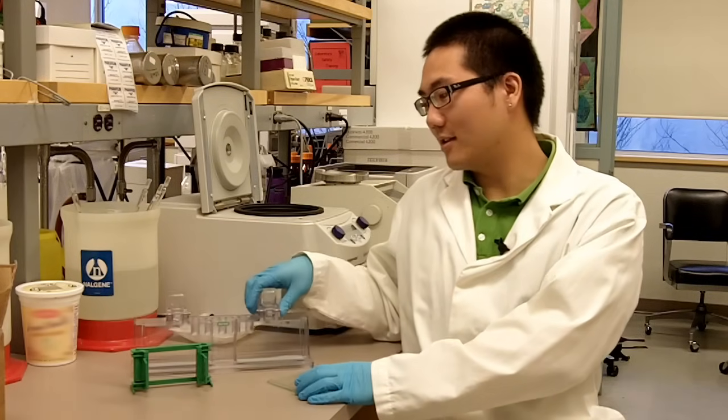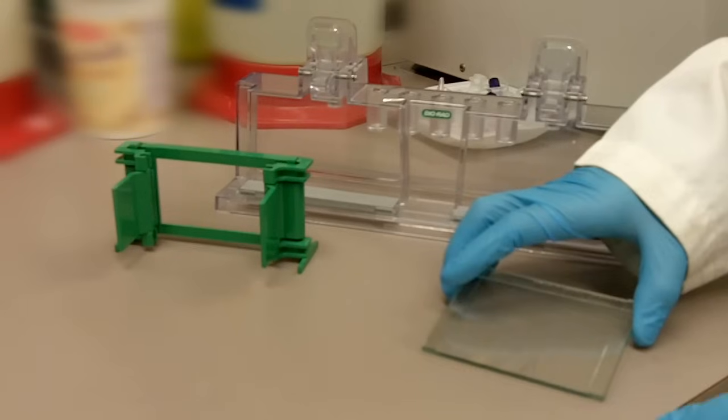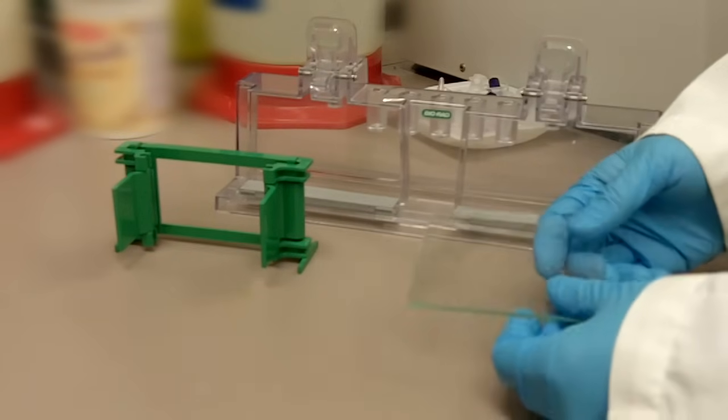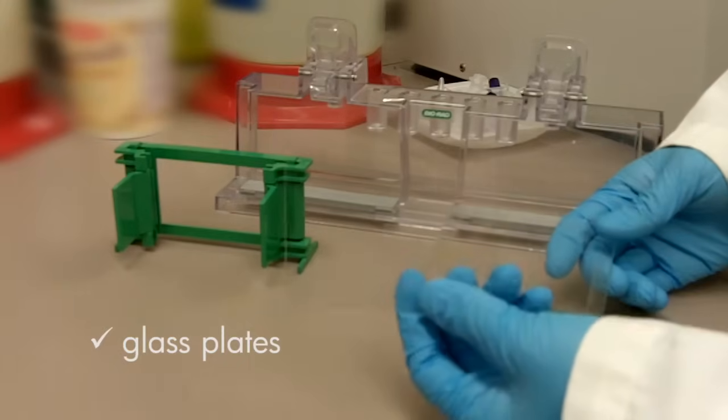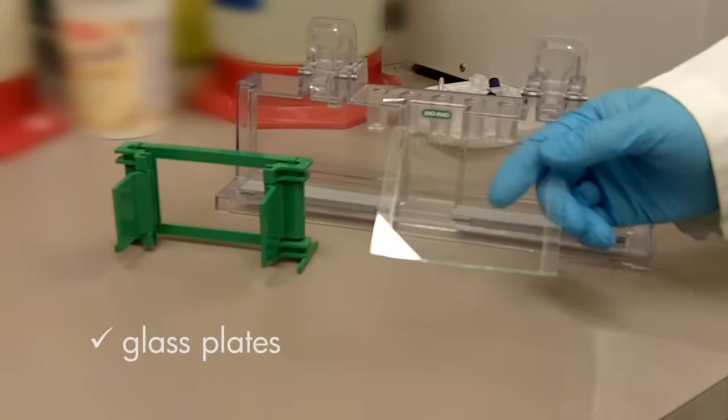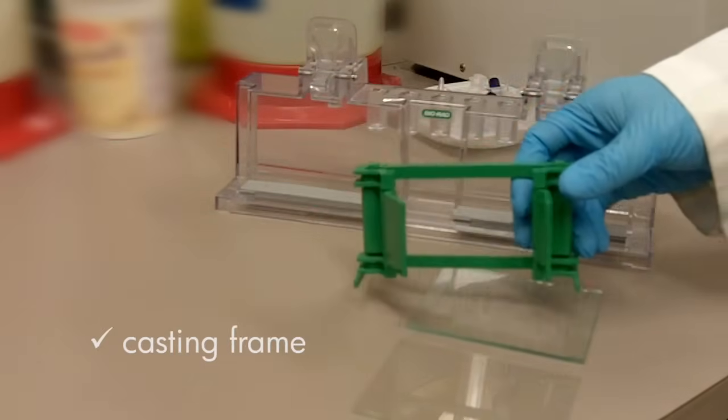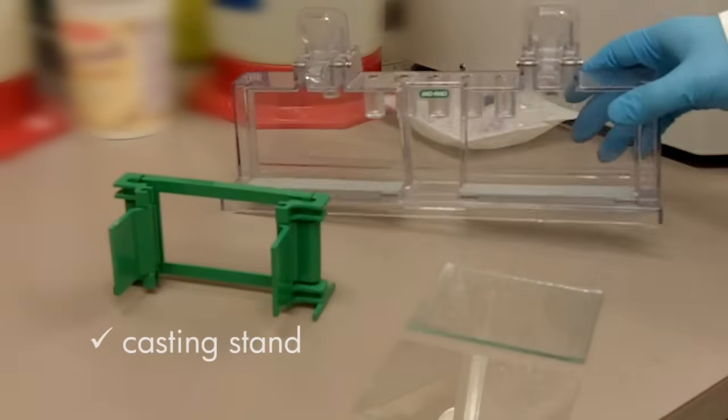Here is the apparatus for casting the gel. There are four different parts to this gel apparatus. First of all, you have two glass plates: a short plate and a tall plate. Then you also have a casting frame and a casting stand.